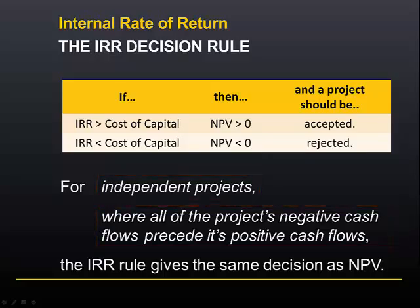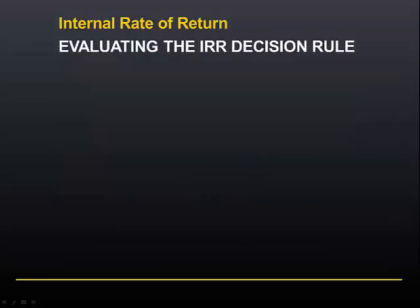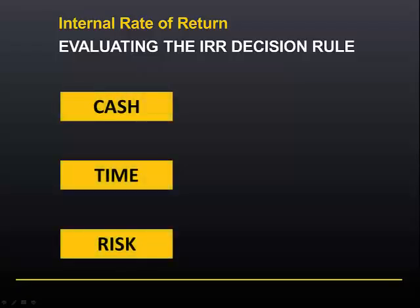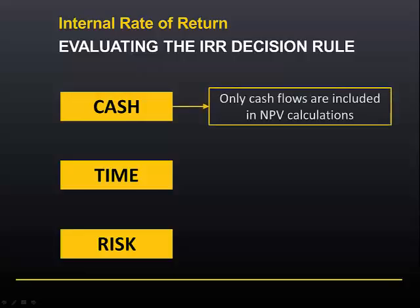We can use the information provided in this slide to evaluate the internal rate of return decision rule. There is a clear relationship between internal rate of return and net present value. If the internal rate of return is greater than the cost of capital, the NPV will be greater than zero, and therefore the internal rate of return decision rule satisfies the three critical factors in finance.